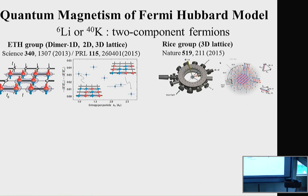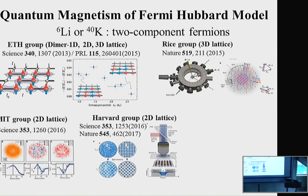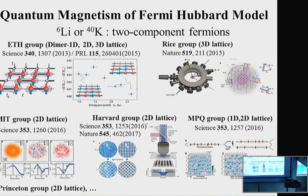The Rice group successfully observed spin correlations in a cubic 3D optical lattice using Bragg scattering. The MIT group, Hubbard group, Max Planck group, and Princeton group used quantum gas microscopy to observe spin correlations in 1D or 2D optical lattices. In particular, the Hubbard group observed and created an antiferromagnetic ordered state. Further impressive progress was reported at this workshop, and all these works are really impressive and important achievements.